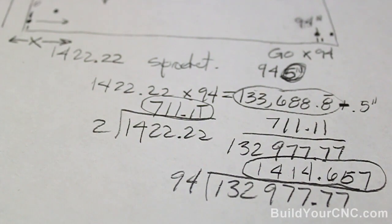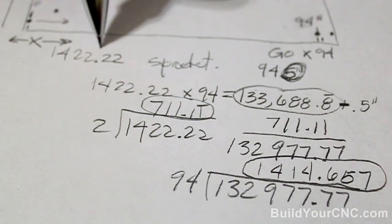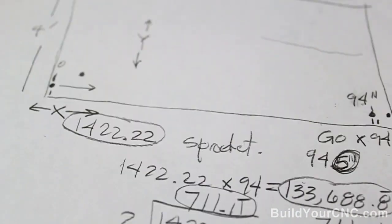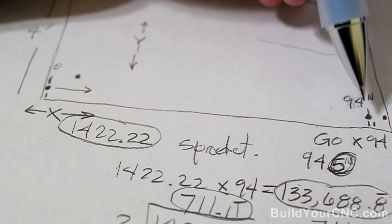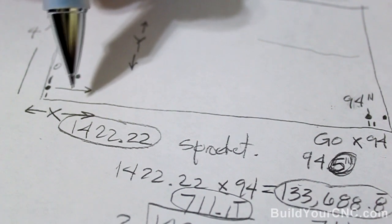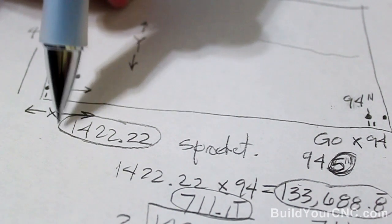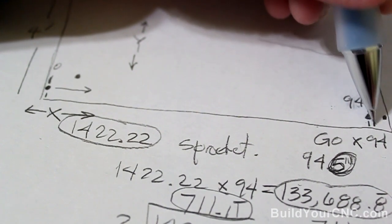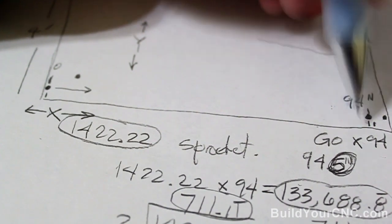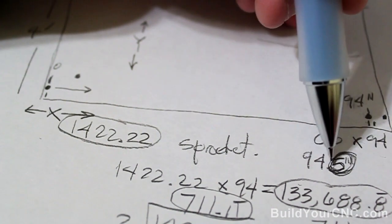So just to review, what we did was we found our theoretical number. We went to the machine. We measured from one point of the machine to the next point of the machine, a long distance. We took that number and we multiplied it by what our theoretical number was. We took the difference between the real and the theoretical number in measurement. We were off 0.5. If it was measured as 94.5.